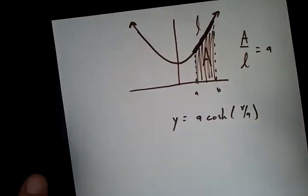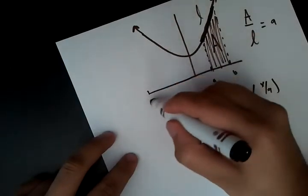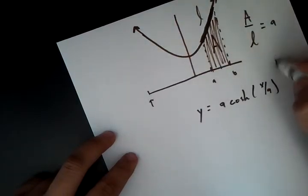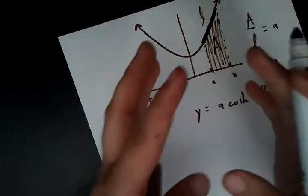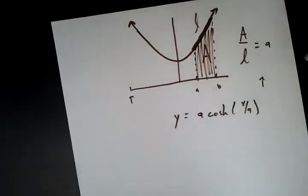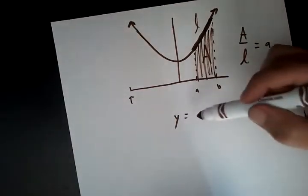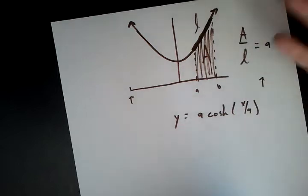And this is true no matter which points you pick. I could have picked a point all the way over here and a point all the way over here. And I could have taken the giant area in between and the really long arc length in between. And when I divide them in this ratio, I'm going to get a. And that's one of the coolest things about the catenary.